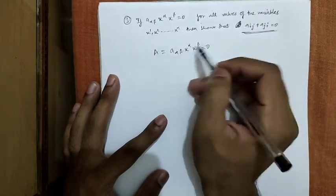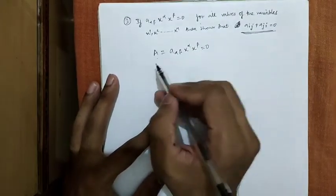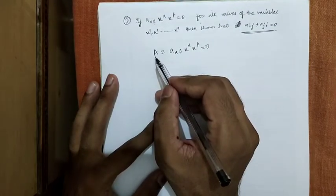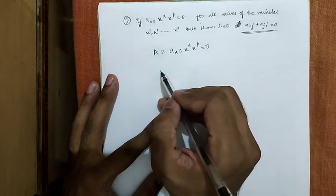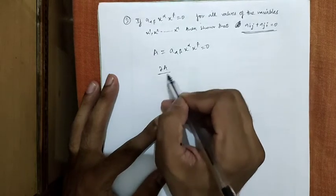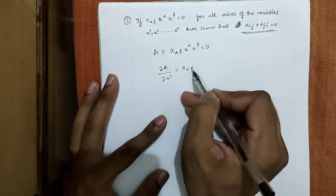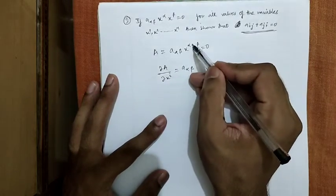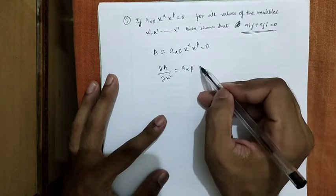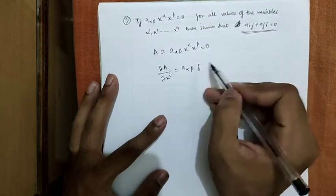As this whole quantity is equal to 0, so A is also equal to 0. Differentiating A with respect to x_i, this will be equals to A_αβ curl x_α over curl x_i, which equals to Kronecker delta.